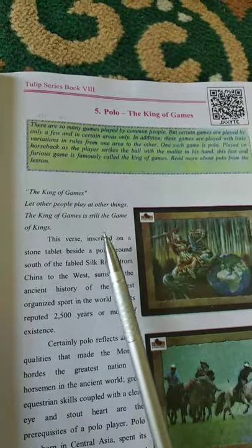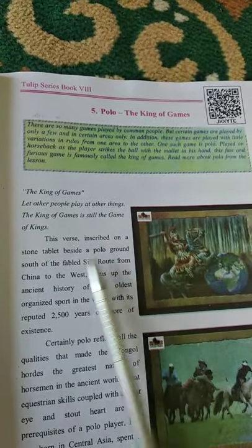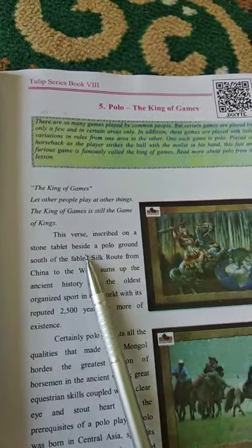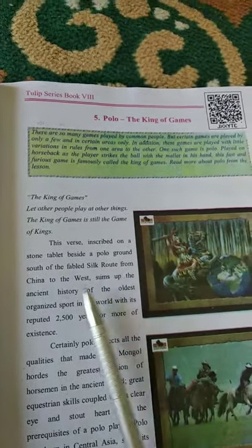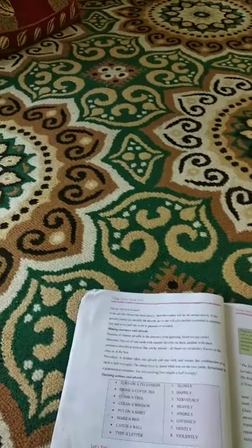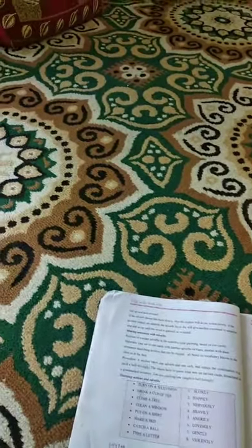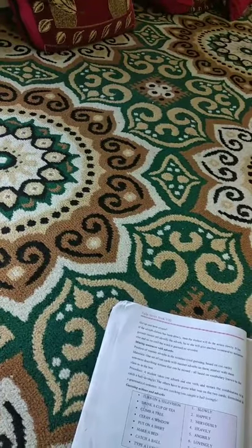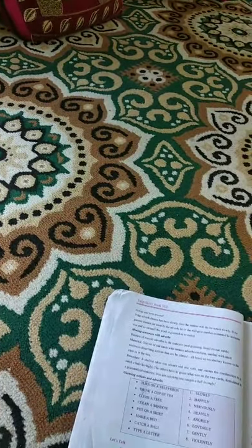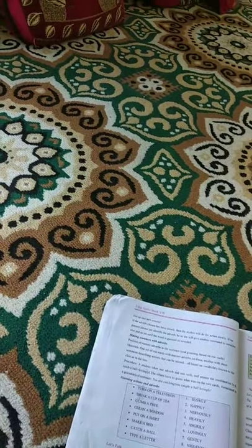This verse inscribed on a stone tablet beside a polo ground south of the fabled Silk Route from China to the west sums up the ancient history of the oldest organized sport in the world with its reputed 2,500 years or more of existence.